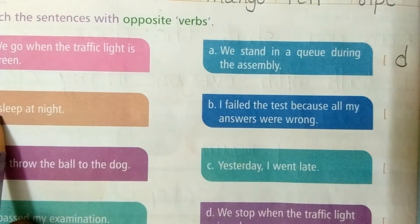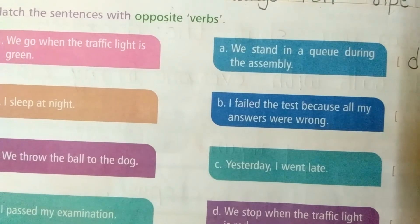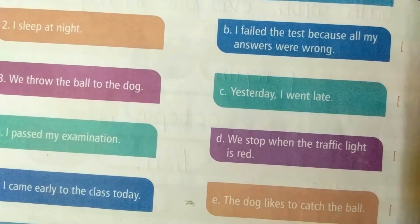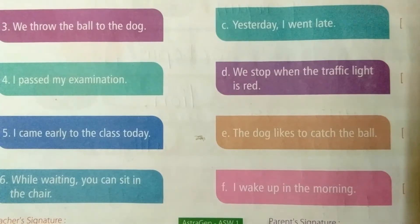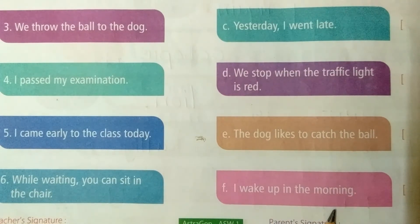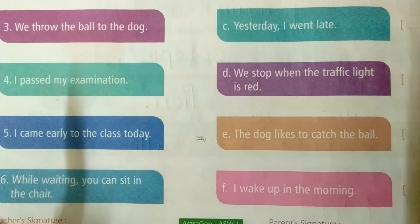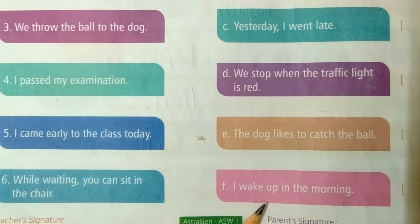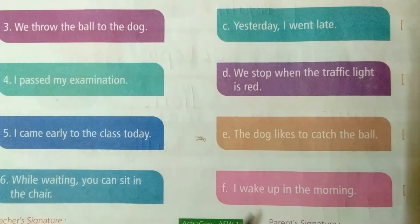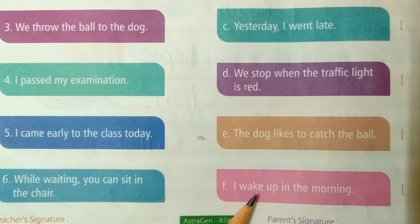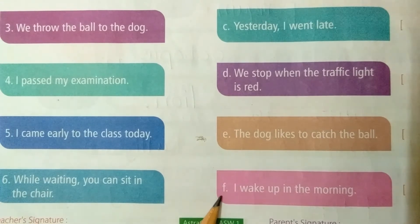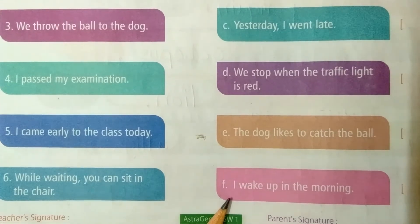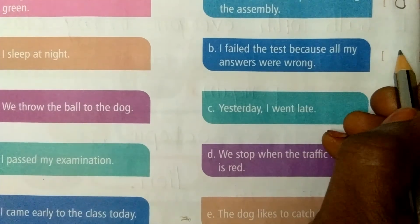Next, second sentence: 'I sleep at night.' The opposite verb is 'wake up.' The matching sentence is: 'I wake up in the morning.' Sleep and wake up are opposite verbs, so that is the correct sentence. Write F in the second blank.